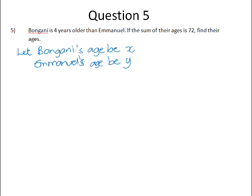Okay, so we are told that Bongani is 4 years older than Emmanuel. So if we want to set up an equation that links Bongani's age to Emmanuel's age, if Bongani is 4 years older, in order to make the two sides the same, we would need to add 4 to Emmanuel's age.